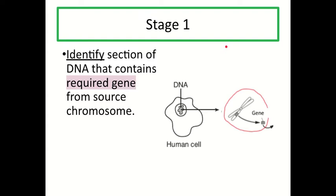Stage one is where you identify a section of DNA that contains the required gene from the source chromosome. Looking at the diagram, we have a human cell with a nucleus containing DNA in the form of chromosomes. Chromosomes are made up of genes that each code for a different protein. If we want our final bacterial cell to make a specific protein like insulin, we need to identify the gene that codes for insulin in the human cell — so we find the chromosome within the nucleus that contains that gene.